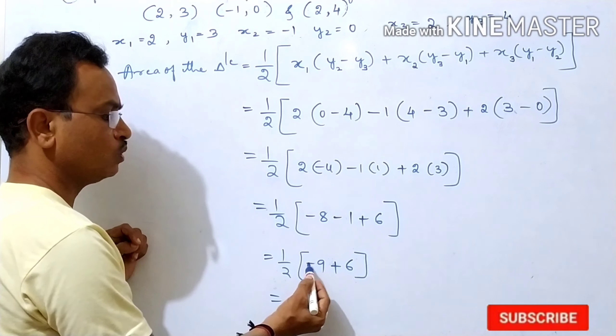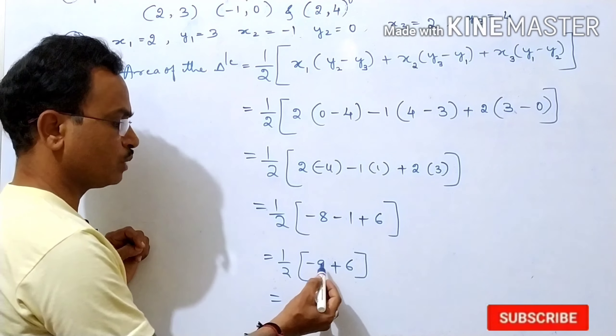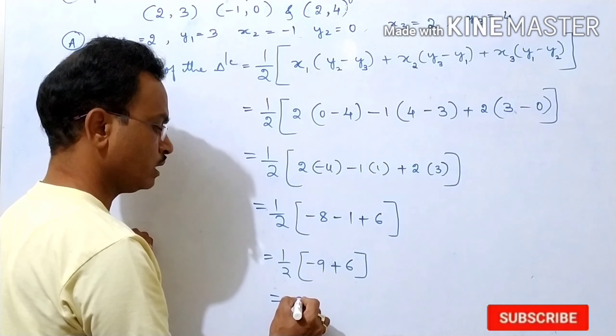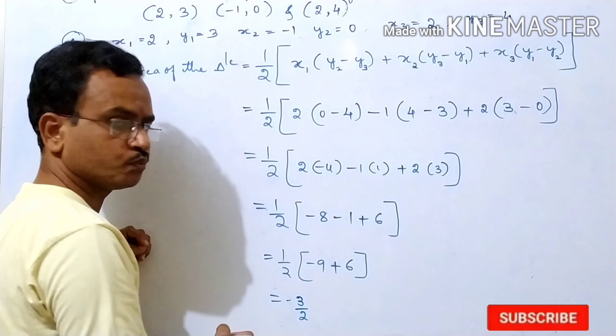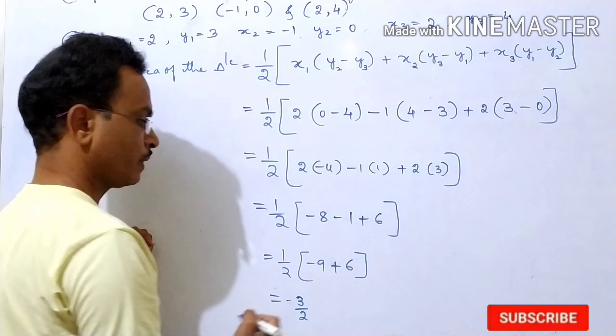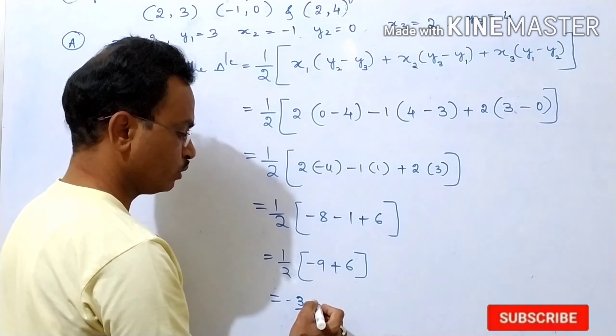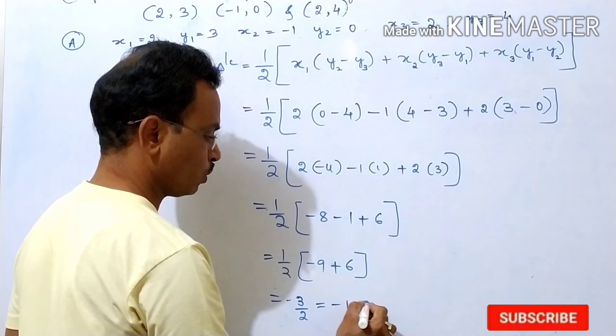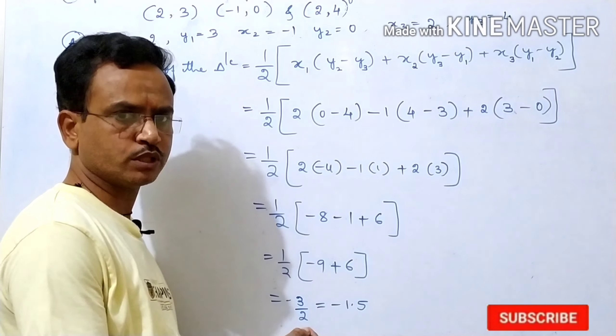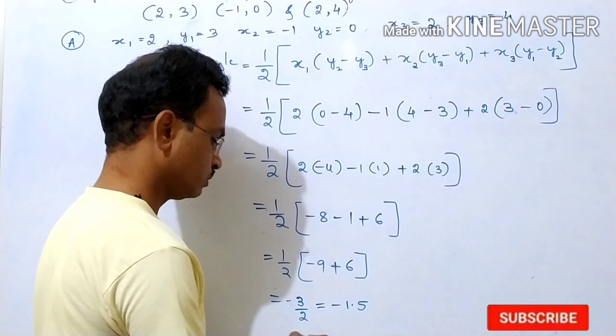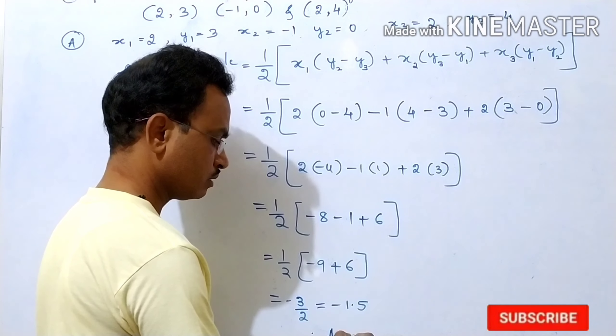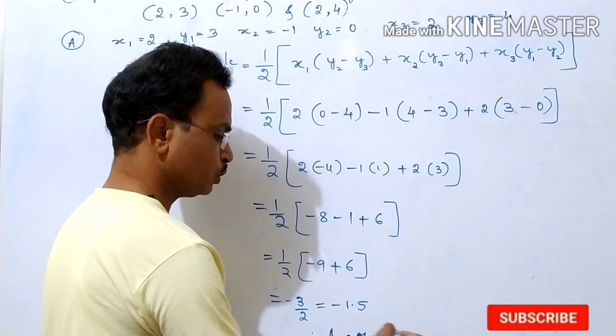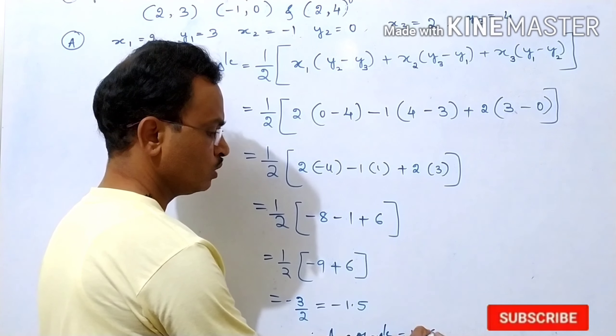Then this is equal to, here opposite signs are there. That means you have to subtract. Minus 9 plus 6, that is equal to minus 3. So, minus 3 divided by 2. Reduce it. This is equal to minus 1.5. You know that area of a triangle always we should take in positive. Therefore, area of a triangle is equal to, we should take in positive, that is 1.5 square units.